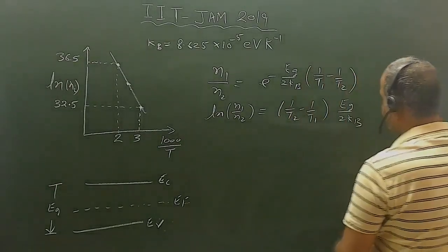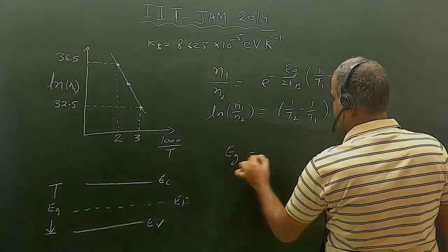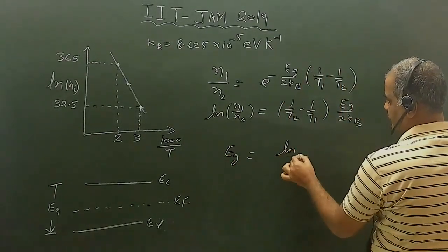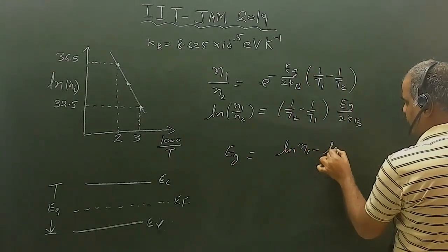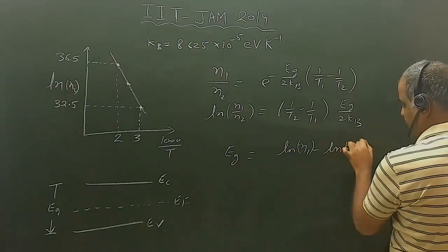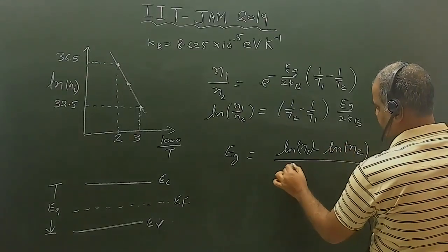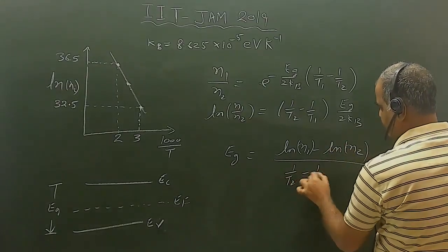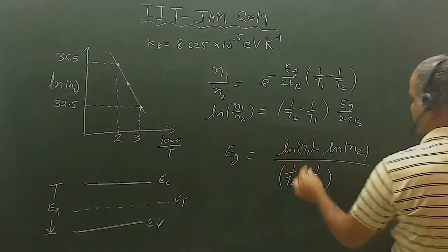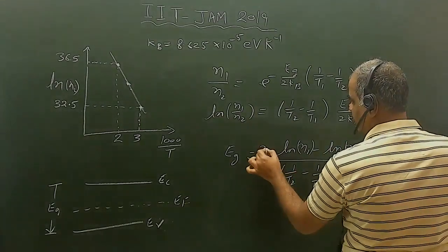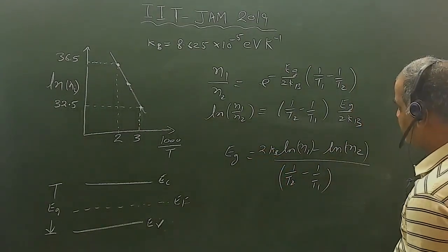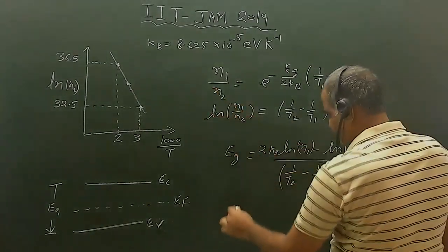Now I can calculate Eg. Rearranging: Eg = [ln(n1) - ln(n2)] / (1/T2 - 1/T1) × 2kB, where kB is the Boltzmann constant. The values are read from the graph.